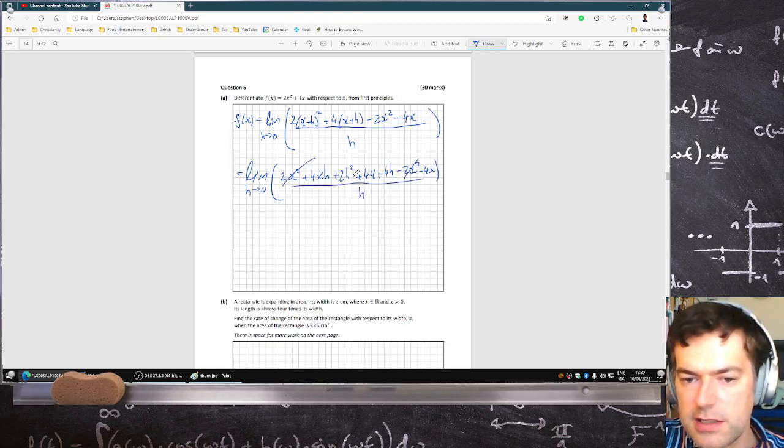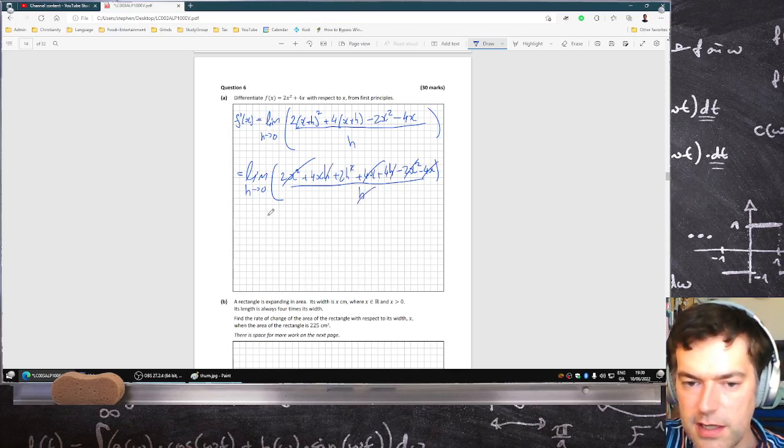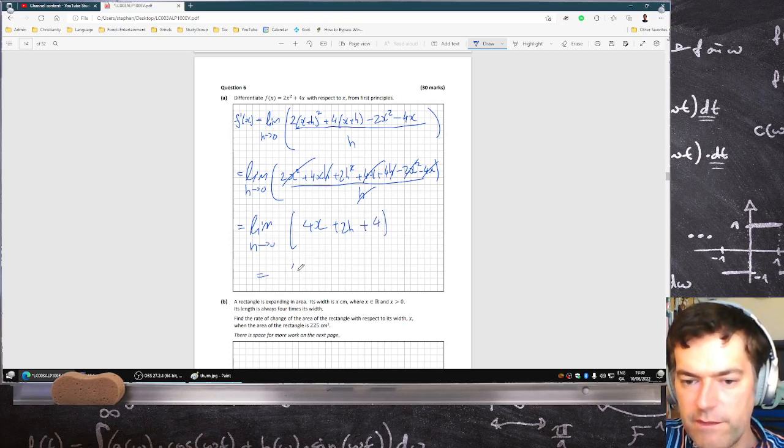That cancels with that, that cancels with that, the h cancels with that h, the square and that h, leaving me with the limit as h goes to zero of four x plus two h plus four, which will equal four x plus four, which is exactly what we were supposed to get.